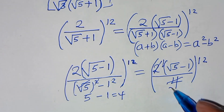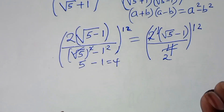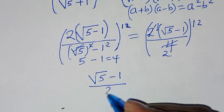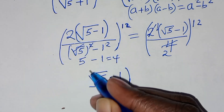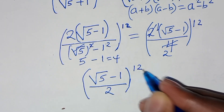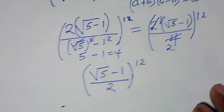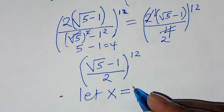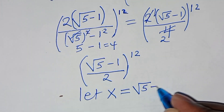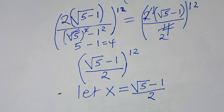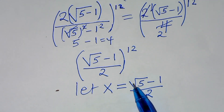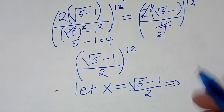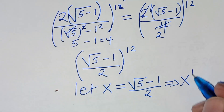Simplifying, we have in the numerator square root of 5 subtract 1, divided by 2, everything raised to power 12. We let x equal square root of 5 subtract 1 divided by 2, and we need to calculate x to the power 12.